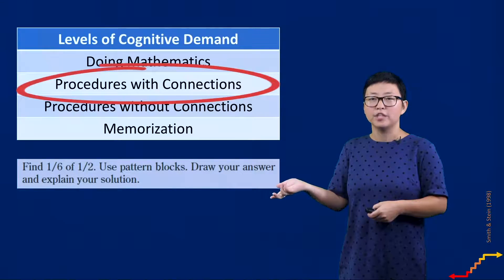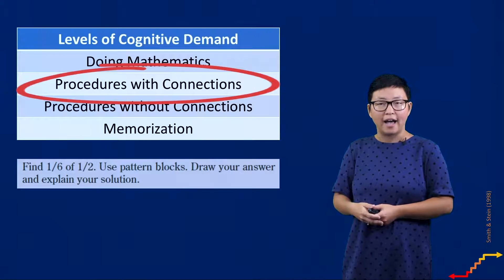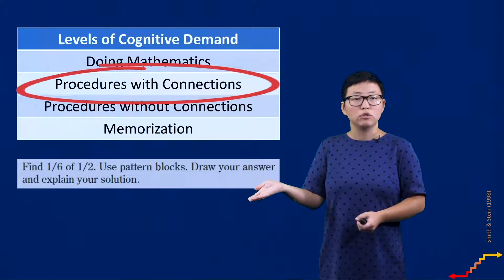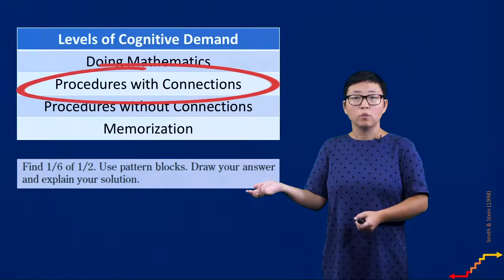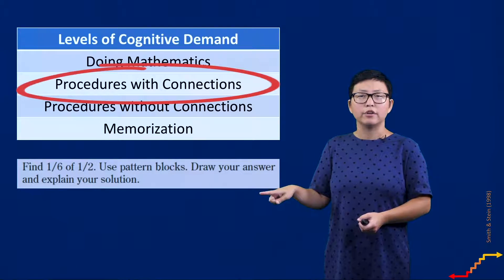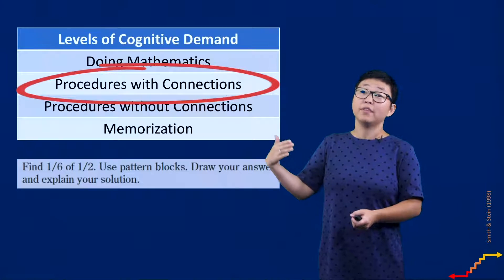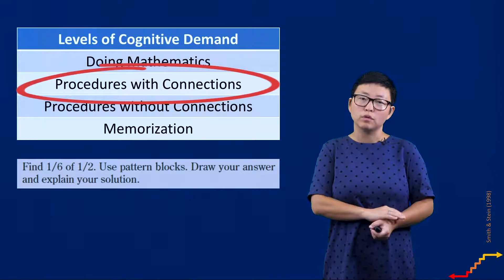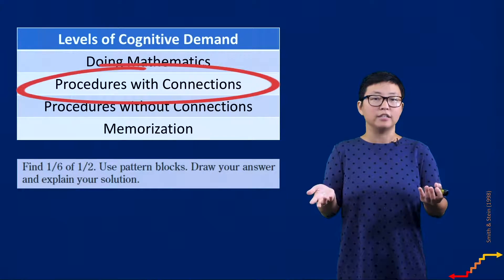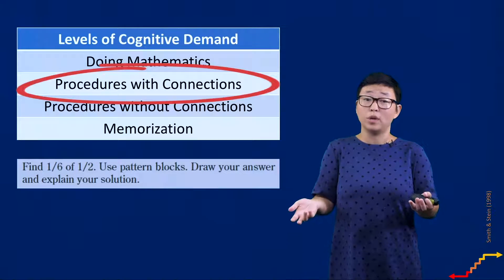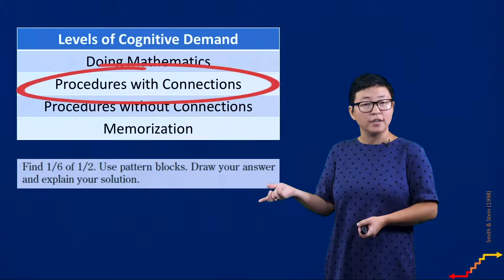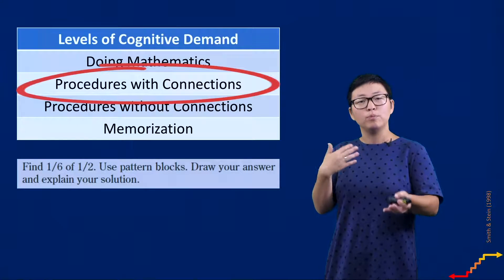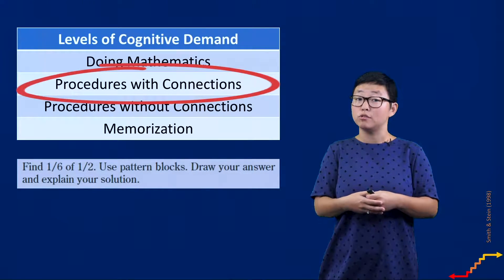An example of this is this problem. Find one-sixth of one-half, use pattern blocks, draw your answer, and explain your solution. Students might draw in some knowledge they have about the procedure for what it means to multiply fractions, but then ultimately they're going to have to represent it in a different way, and then they're really going to have to go that extra step by explaining their solution. Here we're moving away from students reproducing a particular answer and really inviting students to reason about and represent mathematics in whatever way that makes sense to them. You can imagine that if you presented this type of task to students, you could get a whole variety of correct answers, but then would also have really interesting insight into the way students are thinking.